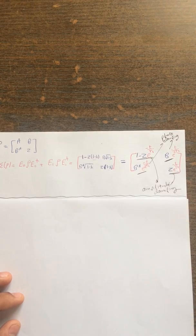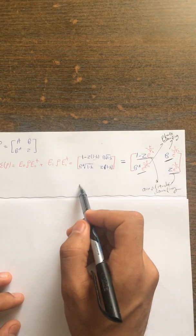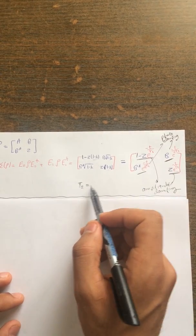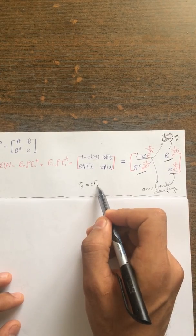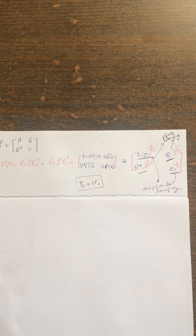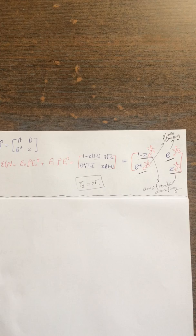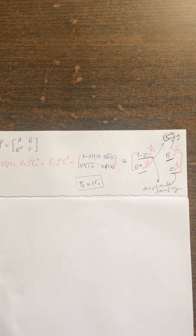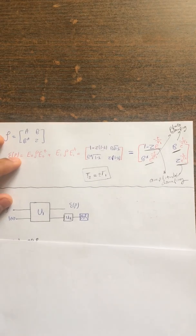An important conclusion: the T2 time for the off-diagonal terms decaying by phase damping is actually twice the amplitude damping time T1. This is very important in quantum error correction — we want to understand this kind of energy loss for qubits that causes errors. Phase damping and amplitude damping are the major players in the error correction procedures we will examine.